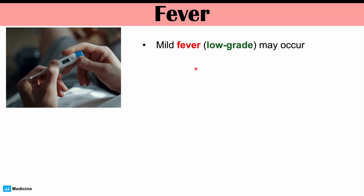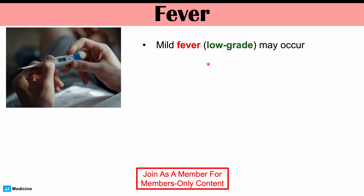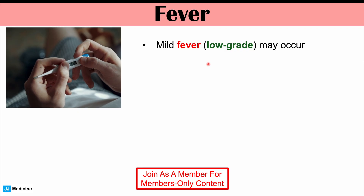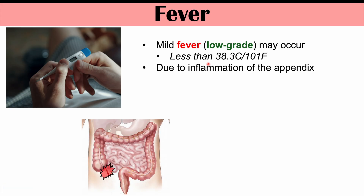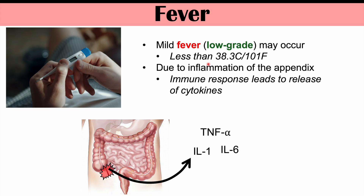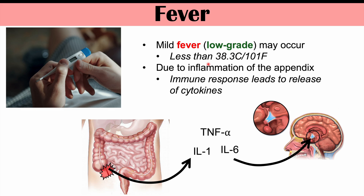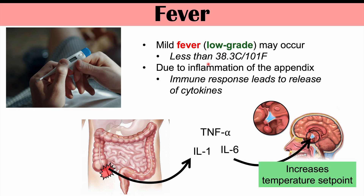Another important finding that may occur early on in appendicitis is fever. The fever is generally mild at first — a low-grade fever, less than 38.3 degrees Celsius or less than 101 Fahrenheit — unless a perforation occurs later that can lead to a more severe fever. Because of that inflammation, the increased cytokines — TNF-alpha, IL-1, IL-6 — act on the hypothalamus, and instead of just suppressing appetite centers, they can also increase our temperature set point, causing our temperature to rise. This is why we can get a bit of a fever in some patients with early appendicitis.